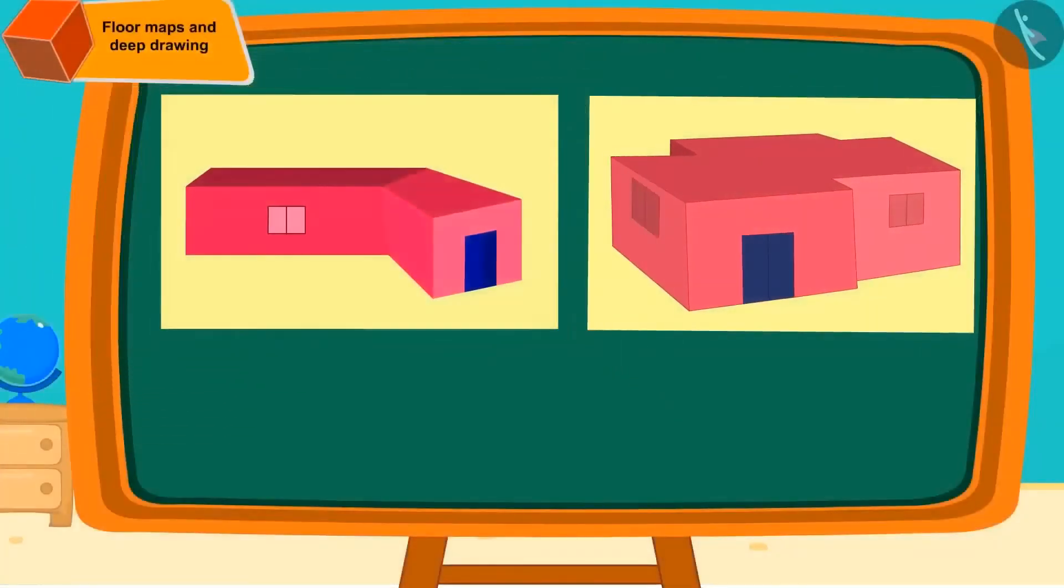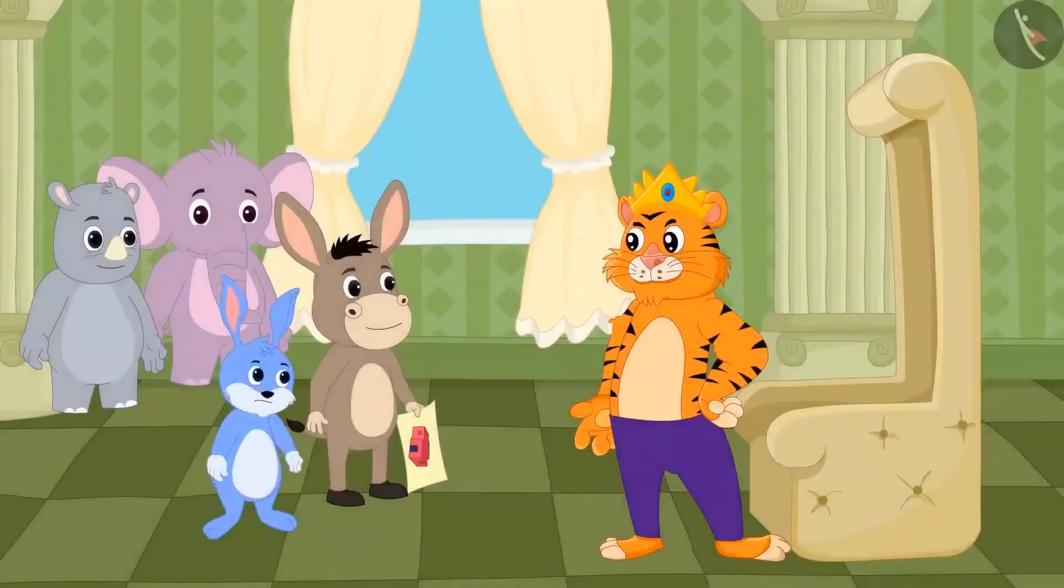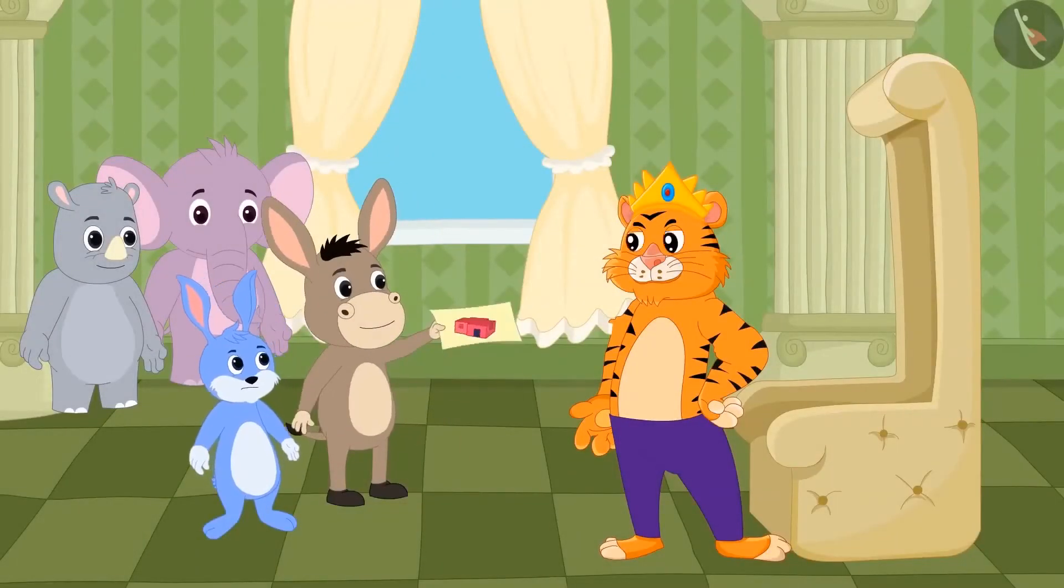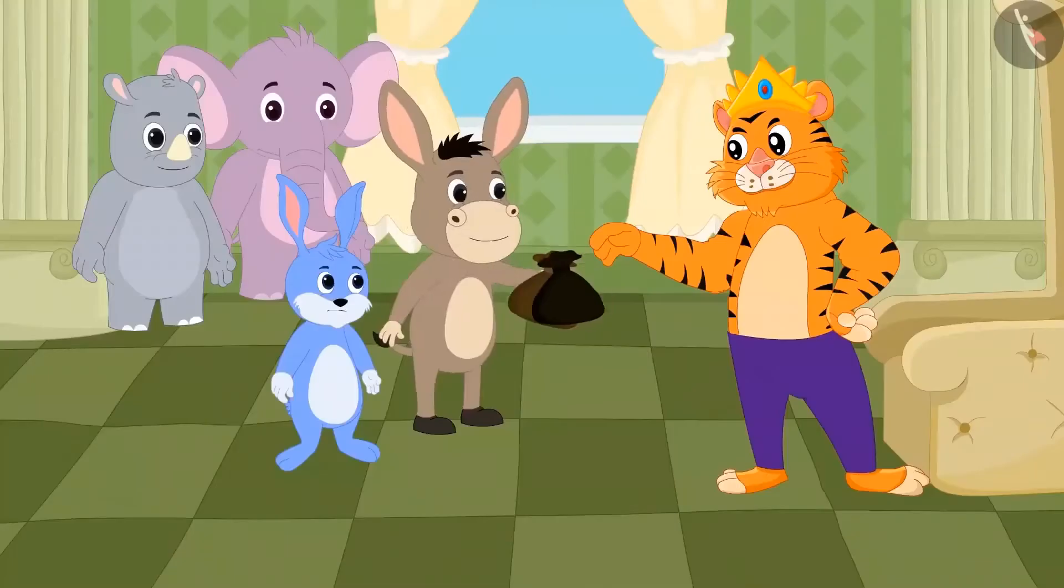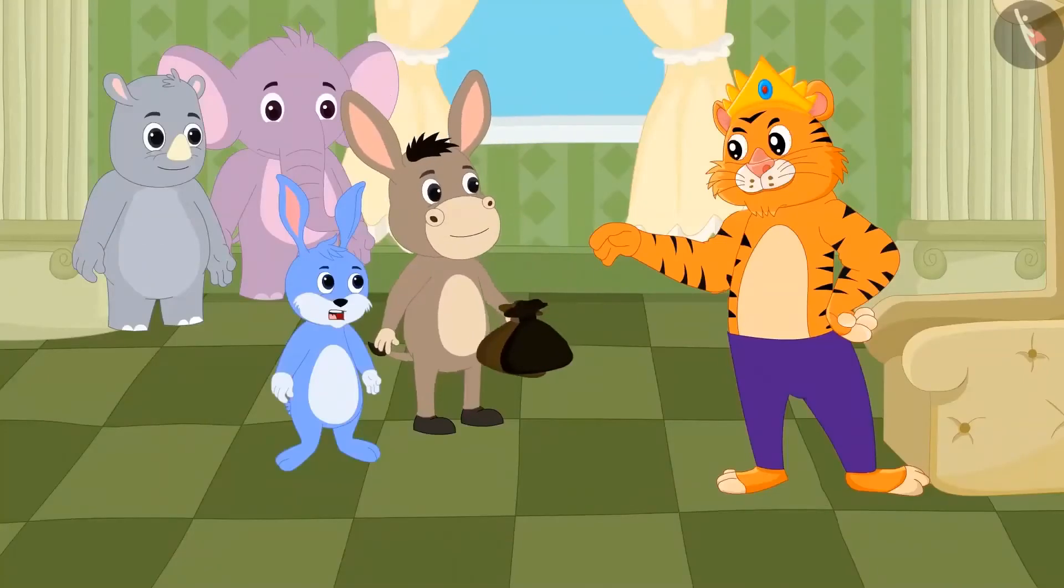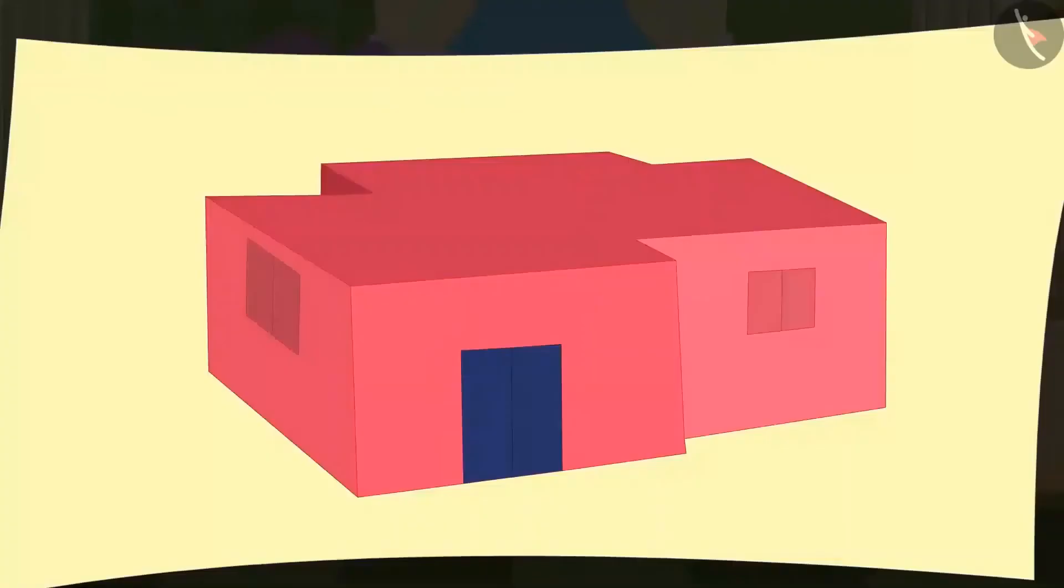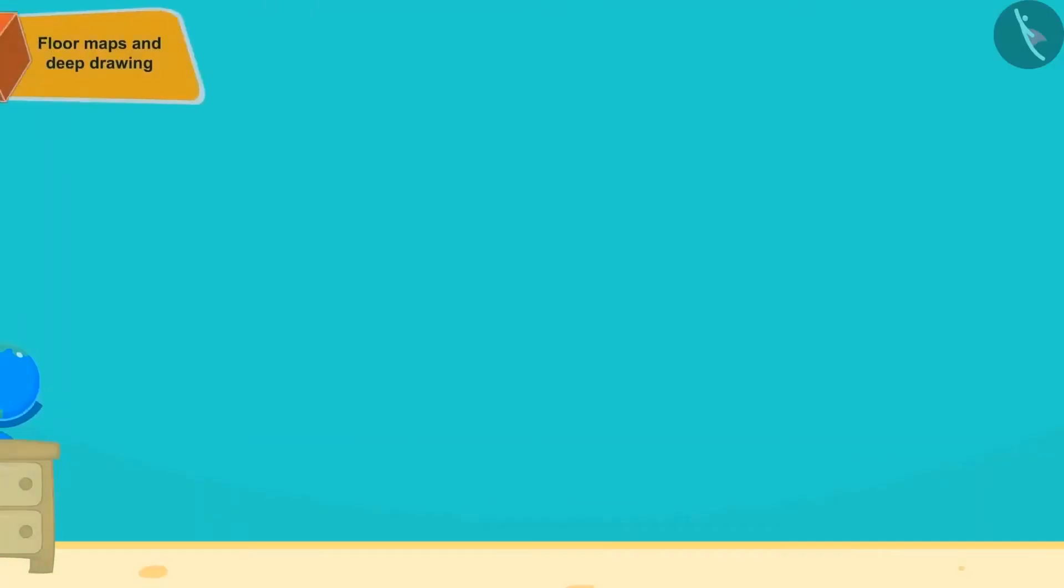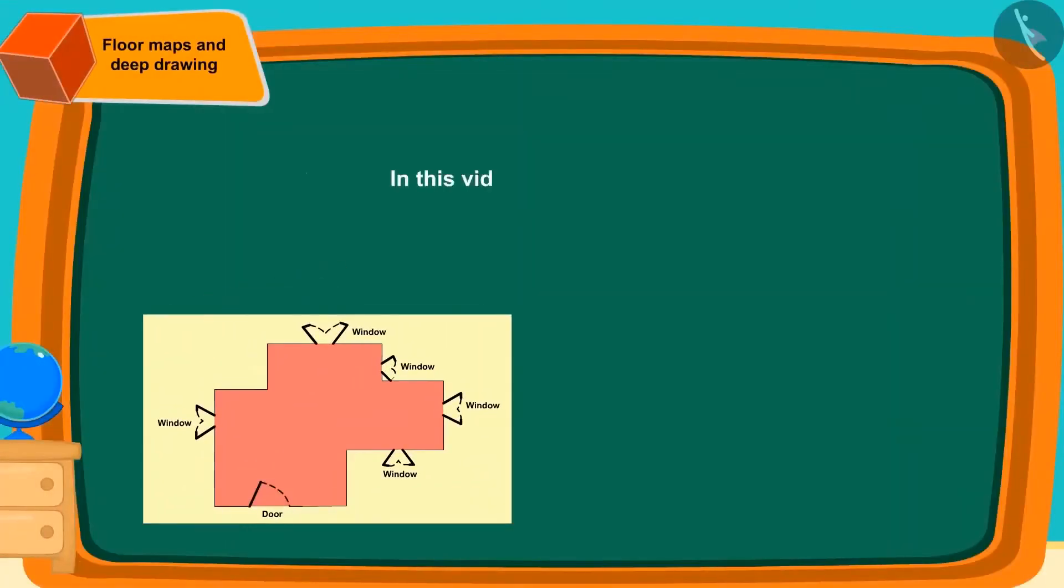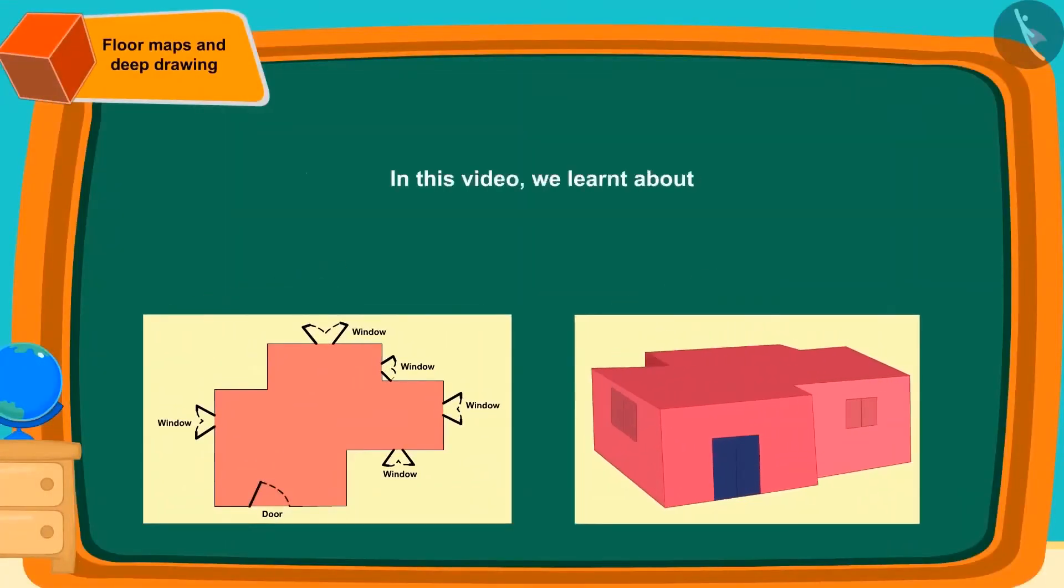The king saw many more designs, but out of all he liked Bholla's design the best. At last, the king rewarded Bholla. Bholla immediately gave half of it to Bunny, because he made that deep drawing by looking at the map of the floor made by Bunny. Children, in this video we learned about the map of the floor and what are deep drawings.